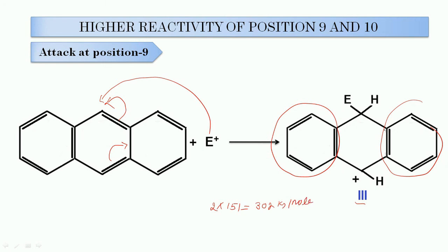So if we compare: attack at position 1 and position 2 gives a resonance energy of 255 kJ/mol, while when attack occurs at position 9, the resonance energy of the carbocation is 302 kJ/mol. So we can say that when attack occurs at position number 9, we get more resonance-stabilized contributing structures. On the basis of this factor, the attack preferably occurs at position 9 and 10 in the case of Anthracene.